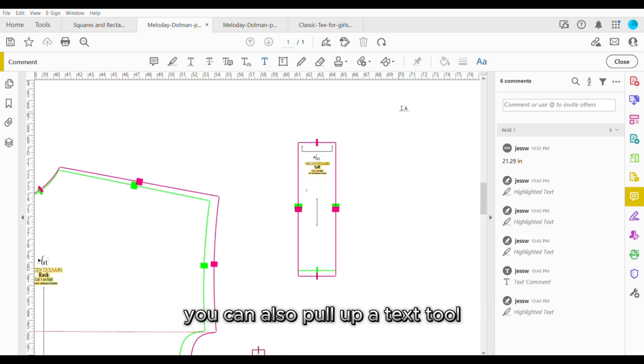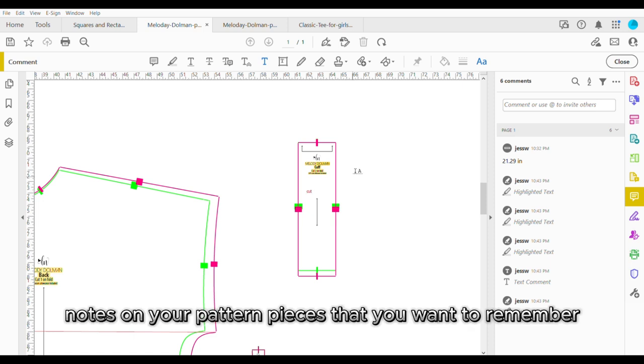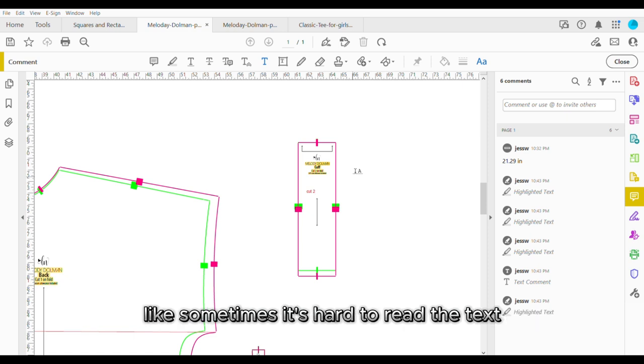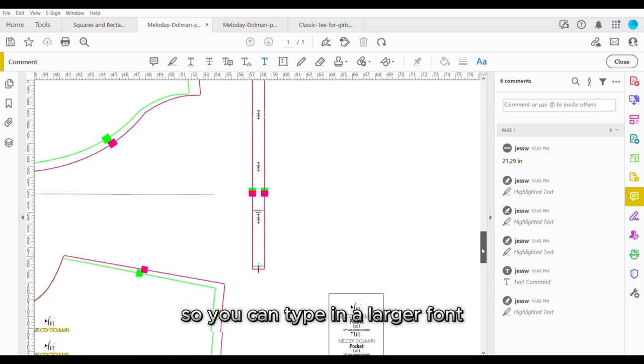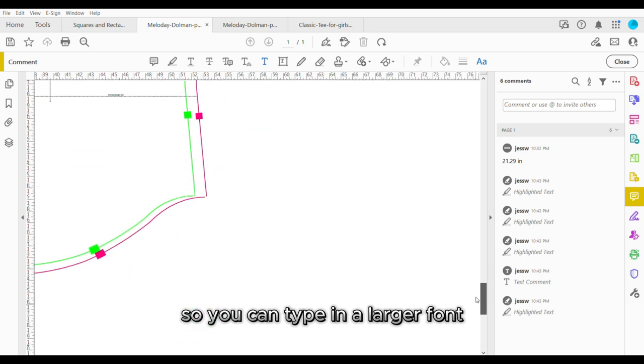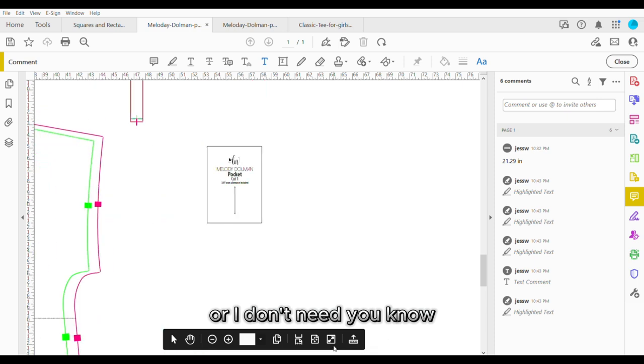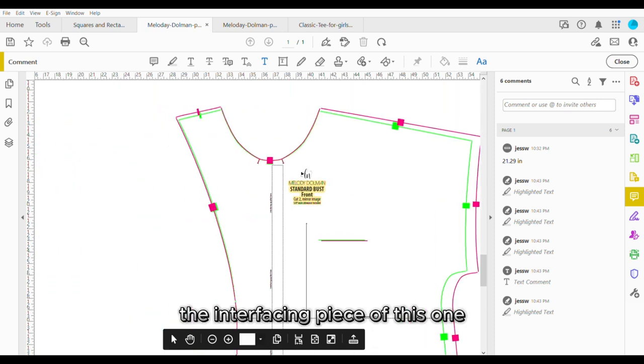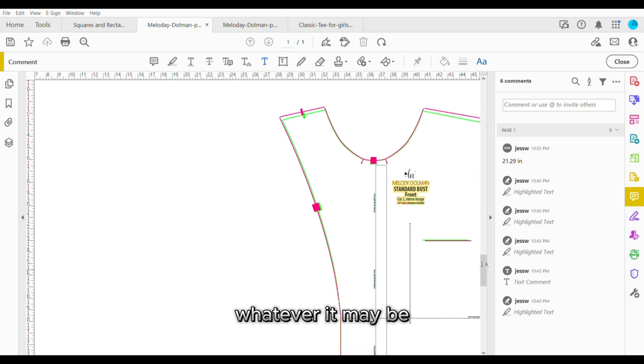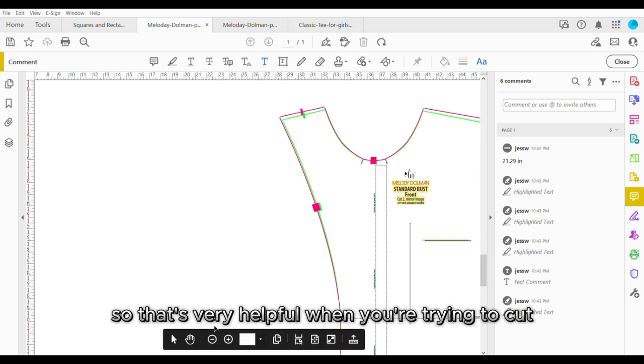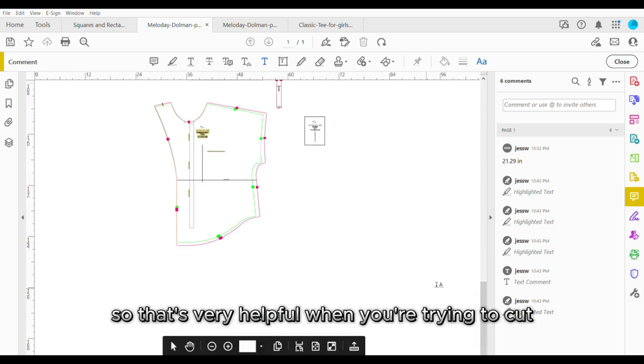You can also pull up a text tool and then you can write notes on your pattern pieces that you want to remember. Like sometimes it's hard to read the text because it's very small. So you can type in a larger font. I need two of this piece or I don't need the interfacing piece of this one, whatever it may be. So that's very helpful when you're trying to cut.